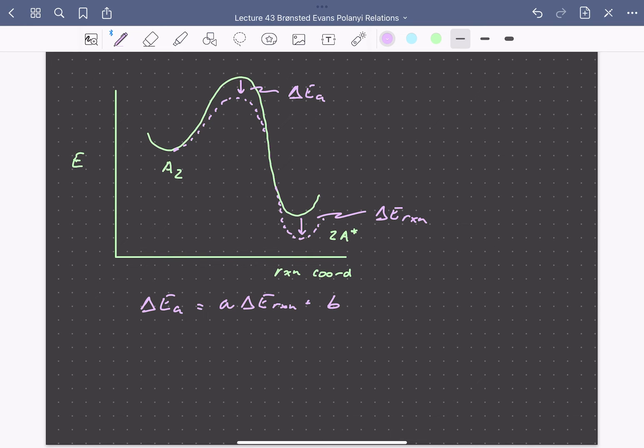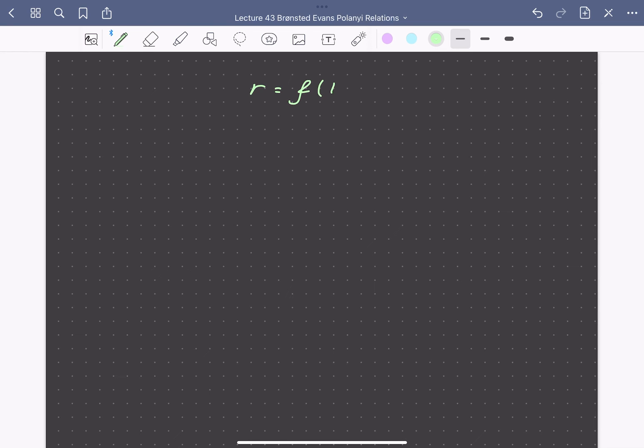Combining these transition state and reaction energy scaling relations allows us to describe rates in terms of often a single variable. Initially we had a rate equation which was a function of activation energies or reaction energies for each of our elementary steps, but now through the BEP relations we can write that the activation energies are some linear function of a descriptor, and through our linear scaling relations we can write the reaction energies for our different elementary steps as a function again of a descriptor. In essence, we've greatly simplified the problem of describing our rate quantitatively by mapping a function of many energetic variables onto just one energetic descriptor.